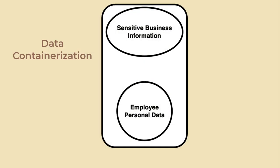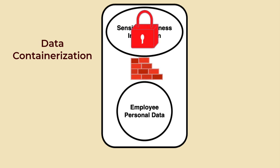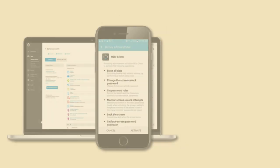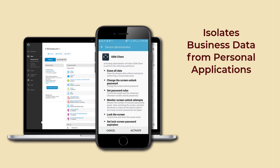Data containerization involves isolating business data from personal data on the same device, ensuring that business data is stored in a secure container that is separate from personal apps and data. For example, BlackBerry Unified Endpoint Management uses containerization to protect corporate data on BYOD devices. This separation helps to prevent personal apps from accessing business data and vice versa. It also means that if a device is compromised, the impact on business data is minimized. Containerization is a key feature for organizations that allow employees to use their personal devices for work.